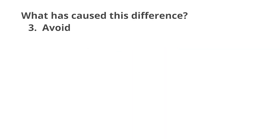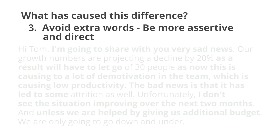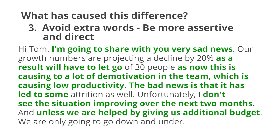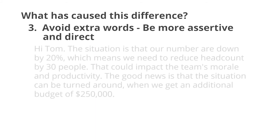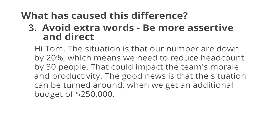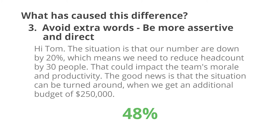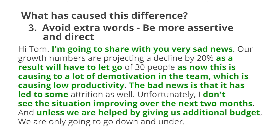Number 3: avoid extra words — be more assertive and direct. The highlighted unnecessary words take away the assertiveness and clarity of the message. In the second text, the number of words has been reduced by 48%, leading to a more positive text sentiment and emotion. The words highlighted in green are less direct. For instance, 'I'm going to share with you' is passive — you're asking permission to share your view. You just need to share it. Also, the line 'unless we are helped by giving us additional budget' gives the listener a choice to say no and sounds submissive.